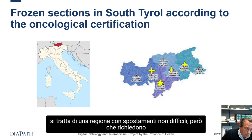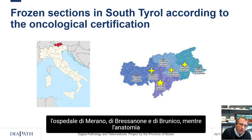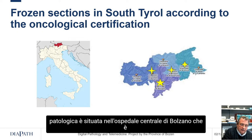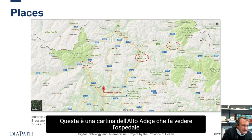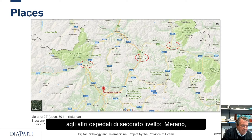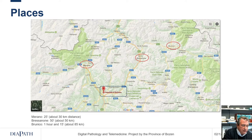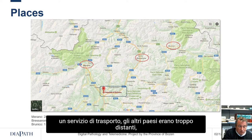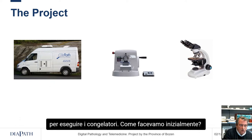I will present our experiment that has become a reality: the possibility of performing frozen sections by digitising the images, and therefore without being physically in the place where the frozen section is carried out. The reason we arrived at this need is linked to the fact that Alto Adige is a mountainous region located in the north of the Italian Republic. We had to provide an impromptu examination service in four of the seven hospitals in our province — Merano, Bressanone, and Brunico — while the anatomic pathology is located in the central hospital of Bolzano. The distances are about 30 km to Merano, around 50 km to Bressanone, and 85 km to Brunico.